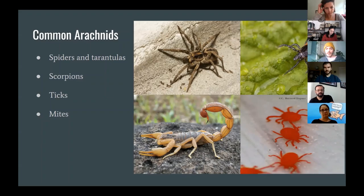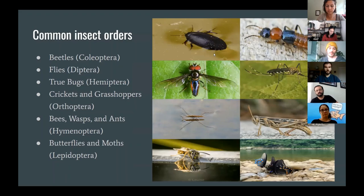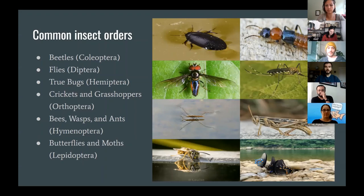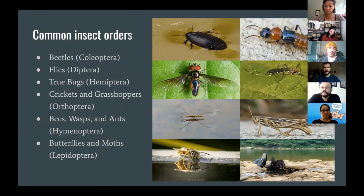Now moving on to insects. There's a bunch of information — it's okay if you don't remember it all; I just want to introduce some general things. The most common orders globally: up top we have beetles, or Coleoptera, generally identifiable by their rounded, very hard back. Here you can see a diving beetle that lives in water, so you could find one of its relatives at your river. Beetles make up somewhere between 30 to 40 percent of all known animal species — not insect species, animal species — so they are super diverse.